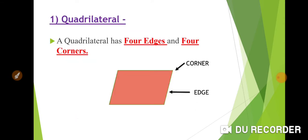Now let's see in detail about all the geometrical figures. Now we start with the Quadrilateral. A Quadrilateral has four edges and four corners.